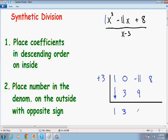And now we need to add the numbers in the third column. We have a negative 11 and a positive 9. Negative 11 plus 9 gives us negative 2.